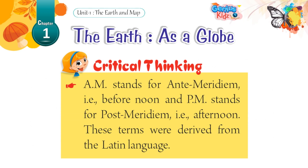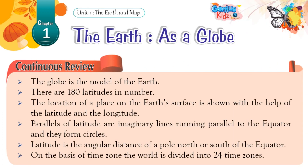Critical Thinking: AM stands for Ante Meridiem — that is, before noon — and PM stands for Post Meridiem — that is, afternoon. These terms were derived from the Latin language. Continuous Review: The globe is the model of the Earth. There are 180 latitudes. The location of a place on the Earth's surface is shown with the help of latitude and longitude. Parallels of latitude are imaginary lines running parallel to the equator and they form circles. Latitude is the angular distance of a place north or south of the equator. On the basis of time zones, the world is divided into 24 time zones.